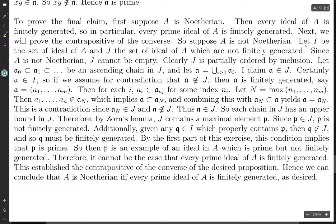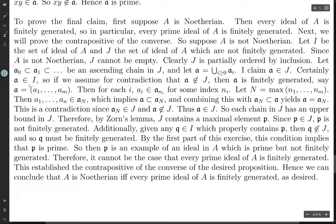Suppose A is not Noetherian. Let I be the set of ideals of A and J be the set of ideals of A which are not finitely generated. A is not Noetherian, so J cannot be empty — if J were empty there would be no ideals that are not finitely generated, meaning all ideals are finitely generated, meaning A is Noetherian, contradicting our assumption. So J is not empty, and it's partially ordered by inclusion, so we want to apply Zorn's Lemma.